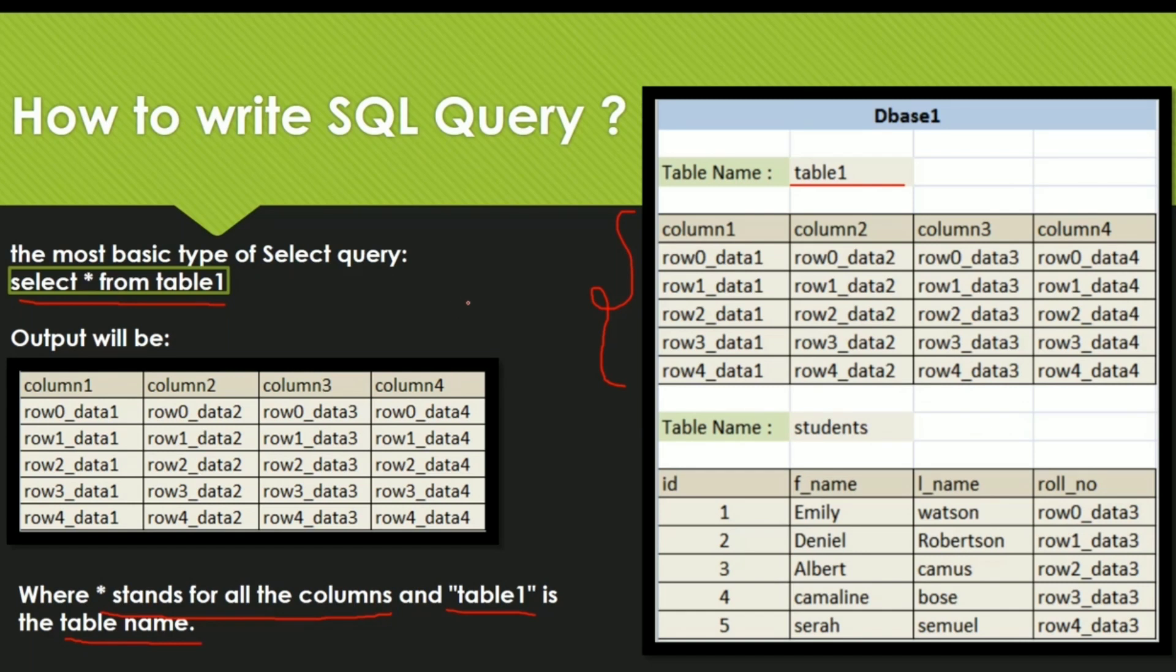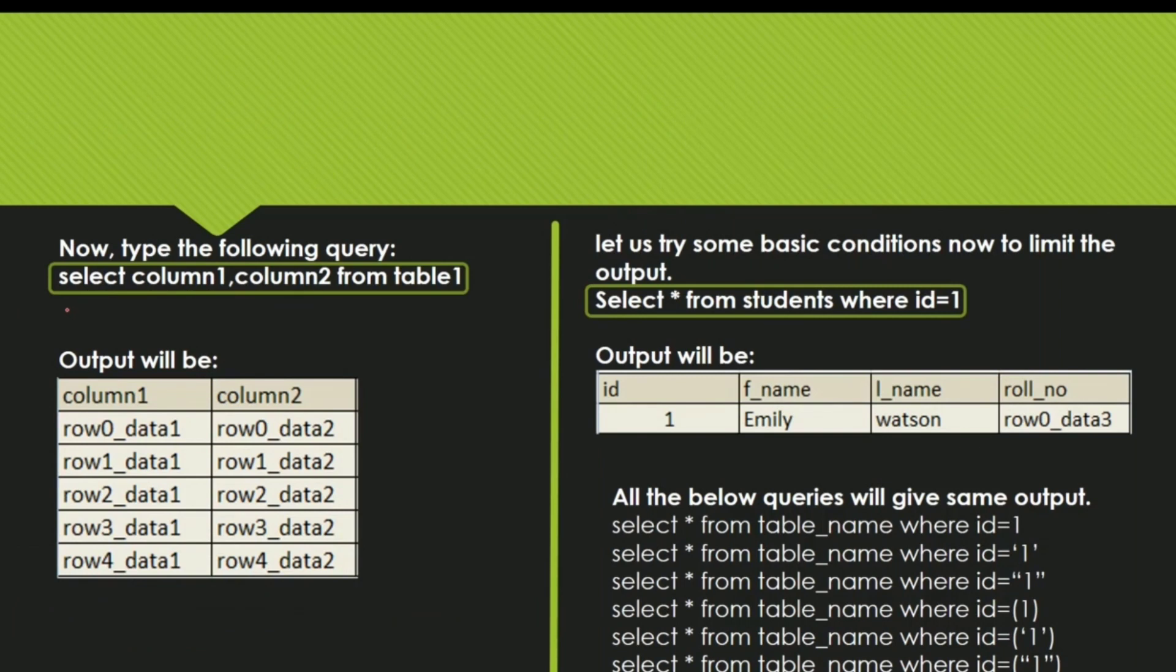Now if I want to fetch only column 1 and column 2 from this table, in that case what will be our query? It will be select column 1 comma column 2 from table 1 and the output will be like this. It will give the result of all the data that is present in column 1 and column 2 as we have asked for it.